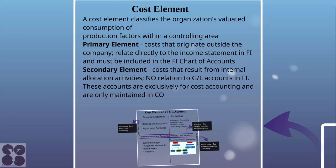Secondary cost elements result from internal allocation activities and have no relation to GL accounts in FI. These accounts are exclusively for cost accounting and are only maintained in CO — that is, Controlling. So secondary cost elements do not have any direct relationship with our financial reporting, that is, our profit and loss account.